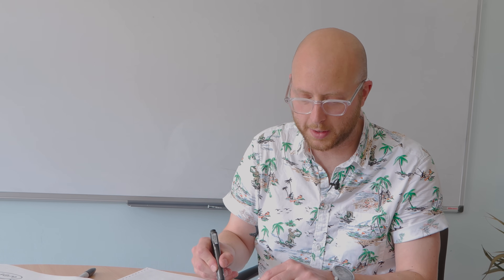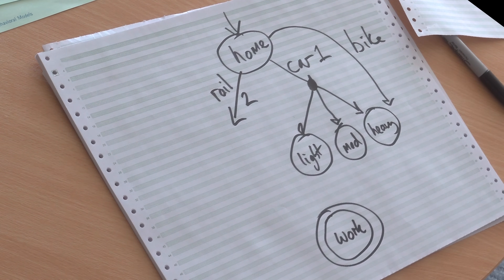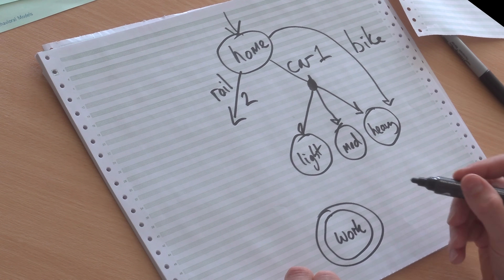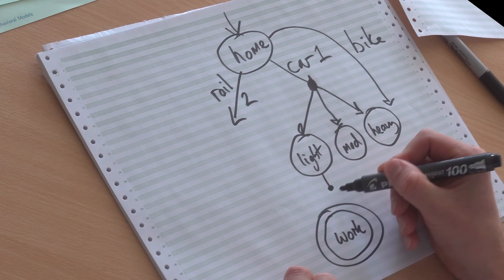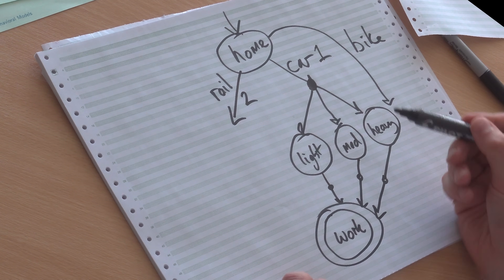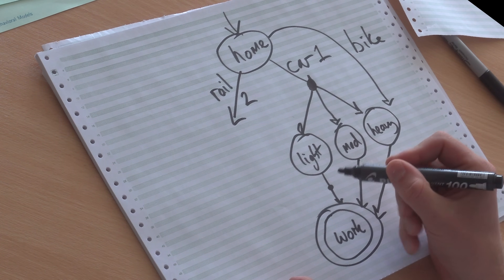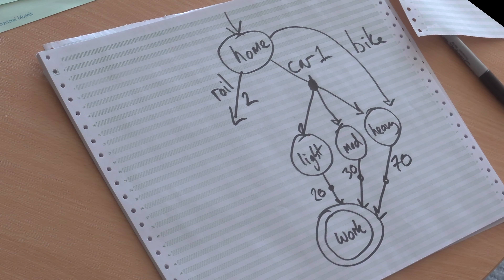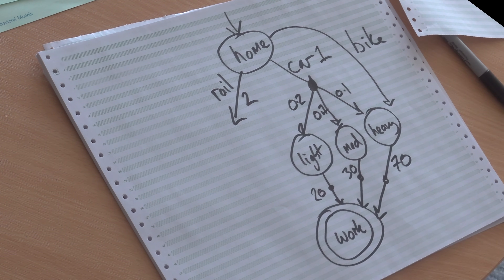Down at the bottom we have 'work', drawn with two circles because it's our absorbing state — the state we want to end up in with no way out. Then we have a 'drive' action which is deterministic: once I take it, it always takes me to work, but I can only take it once I'm in my car. Heavy traffic takes 70 minutes to get to work, 30 in medium, and 20 in light. The probabilities are 0.2 for light, 0.7 for medium, and 0.1 for heavy.